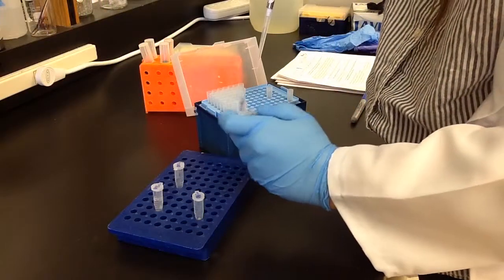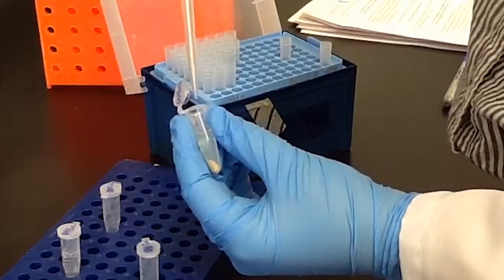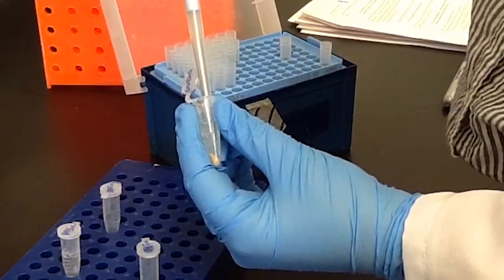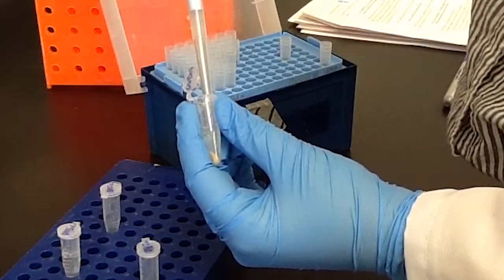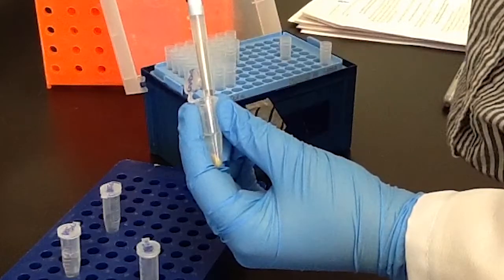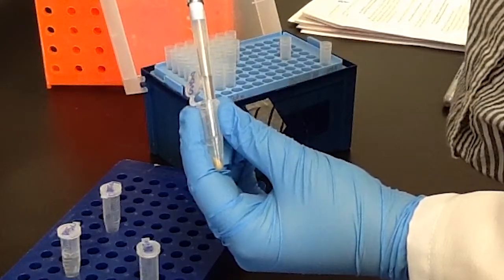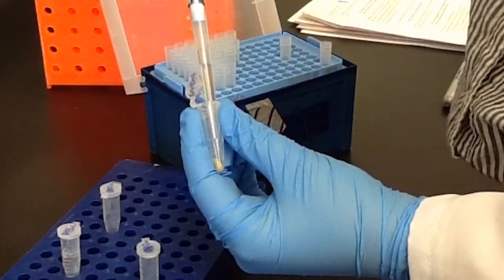I then centrifuge the lysate at 20,000 XG at 4 degrees Celsius for 30 minutes and collect the clear lysate. I do this by removing the supernatant and transferring that to a clean Eppendorf tube.